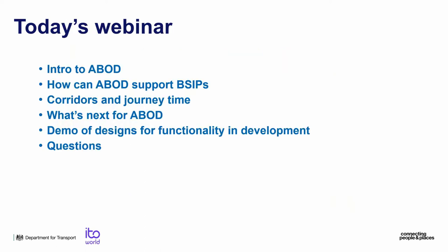I'll run through what we want to cover today. I'll do a quick intro to analyse bus open data for those who haven't used the service before. I then want to talk about how analyse bus open data can support BSIPs both now and in the future, including some upcoming functionality releasing in the next few weeks around corridor monitoring and journey time analysis. I'll also talk about what's next on the longer-term roadmap to help with bus service improvement plans, followed by a quick demo of the new corridor functionality and the on-time performance section, and then questions.